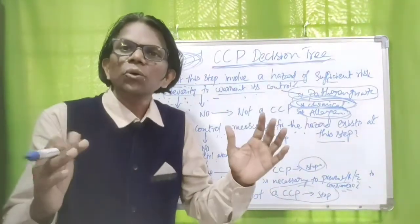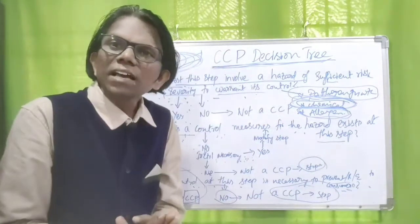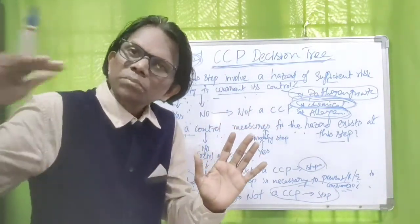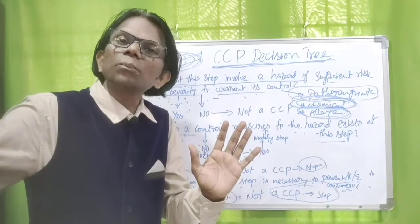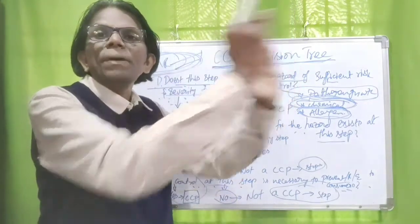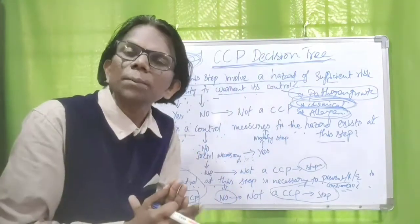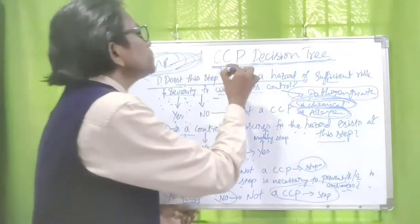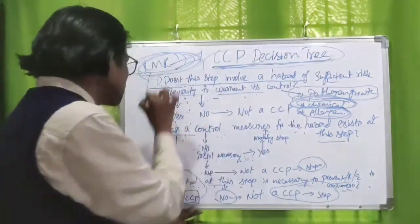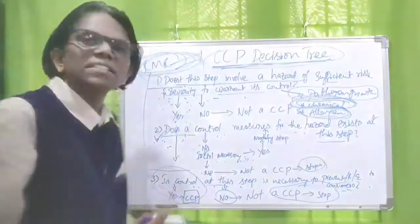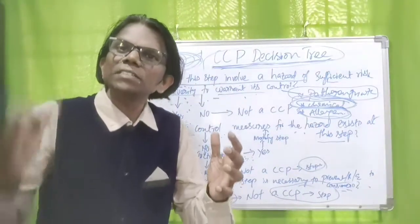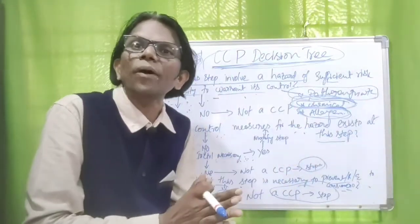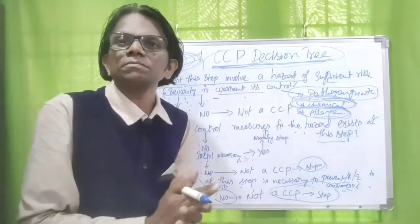This is how we can assess whether a significant hazard is a critical control point or not at a particular process step. This tool — this set of sequential questions — is used to determine whether a significant hazard at a particular step qualifies as a critical control point.